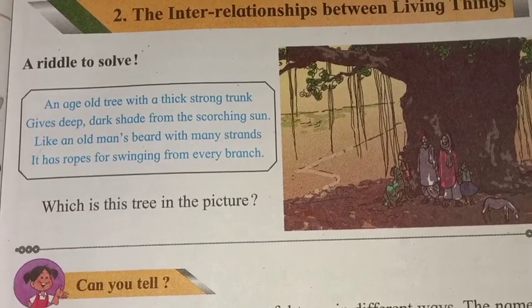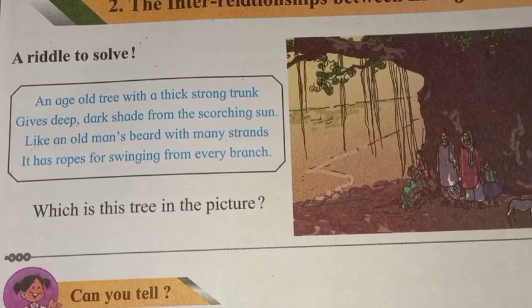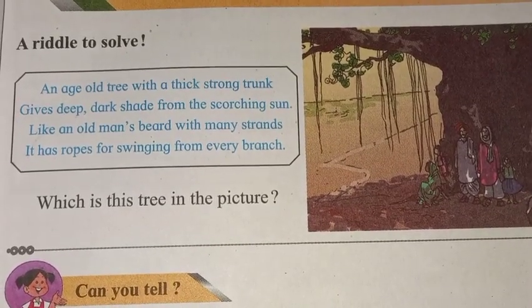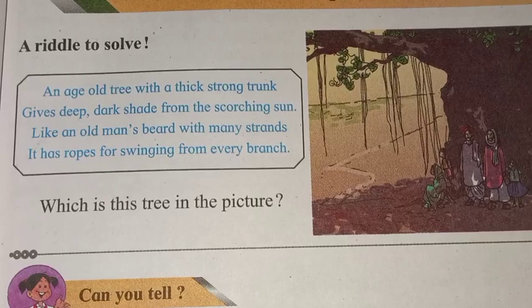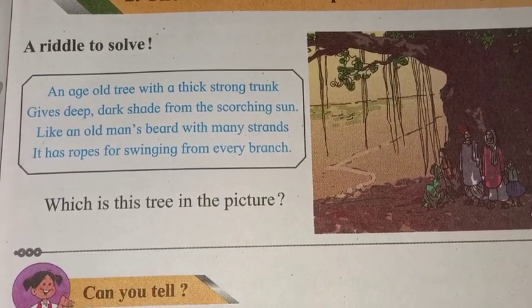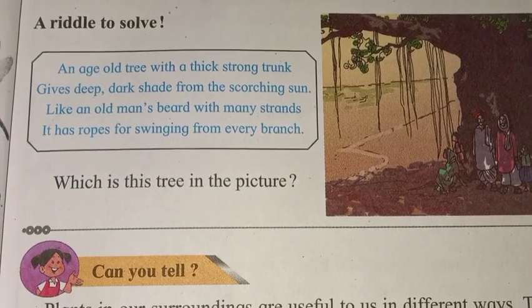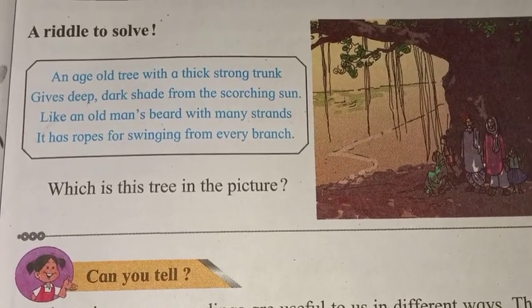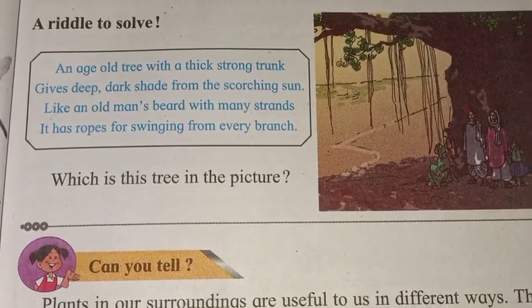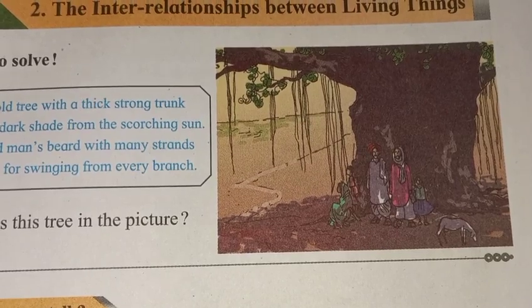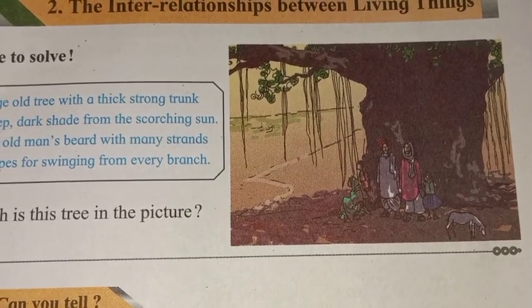So before that, we will solve this riddle. Paheli hai: An old tree with a thick strong trunk gives deep dark shade from the scorching sun. Like an old man's beard with many strands, it has ropes for swinging from every branch. Which is this tree? In the picture it has a huge branch, and on every branch it has branches like a tree.